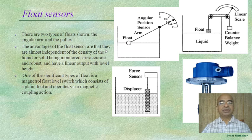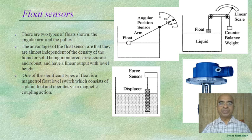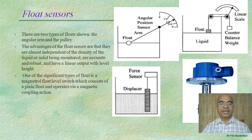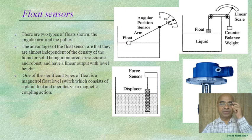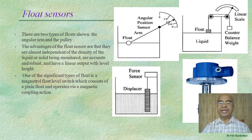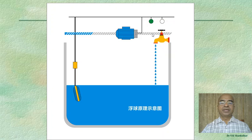The advantages of float sensors are that they are almost independent of the density of the liquid or solid being monitored. They are accurate, robust, and have a linear output with level height. One significant type is the Magnetrol float level switch, which consists of a plain float and operates via magnetic coupling action.